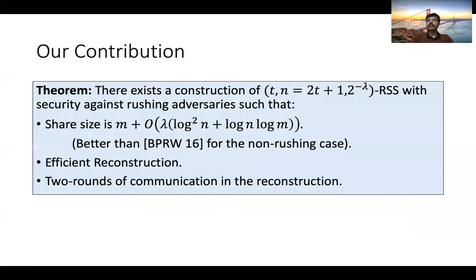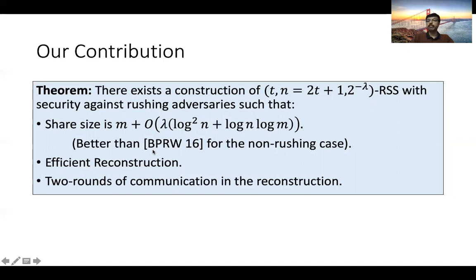In this work, we resolve this question positively by giving a robust secret sharing scheme for N = 2T + 1 with security against rushing adversaries. The share size of our construction is M + O'(N * lambda). An interesting point is that even when restricted to the non-rushing case, our share size is better than the prior best known work by Bishop et al. in 2016. Furthermore, our reconstruction is polynomial time and involves only two rounds of communication.